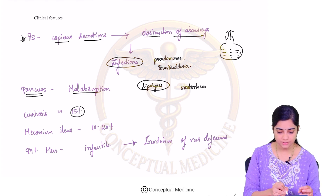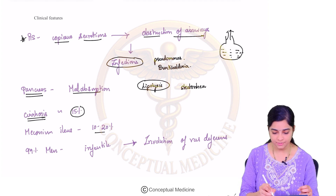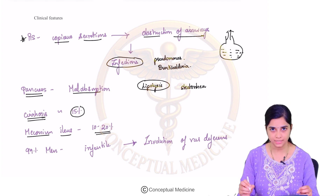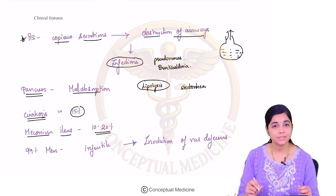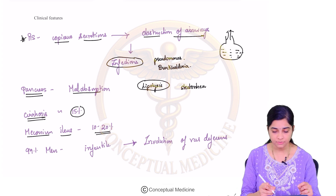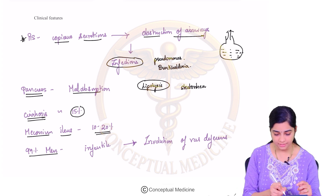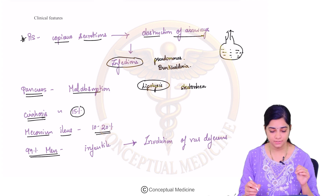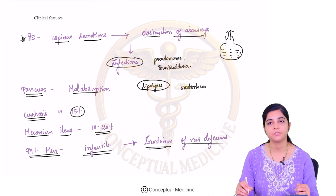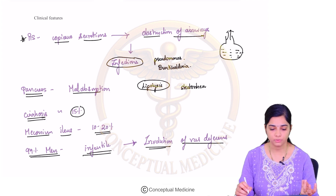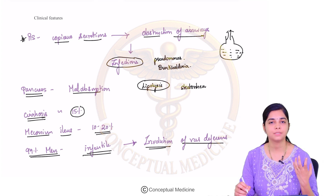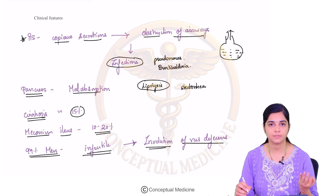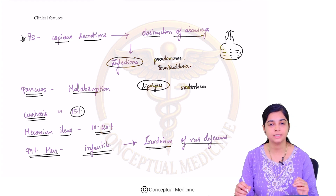In 15% of individuals, you can also have cirrhosis. In 10 to 20% of individuals, you can have meconium ileus. Additionally, 99% of men with cystic fibrosis are infertile because of involution of the vas deferens leading to azoospermia. Always remember these three cardinal clinical features: respiratory system involvement, pancreatic involvement, and infertility.